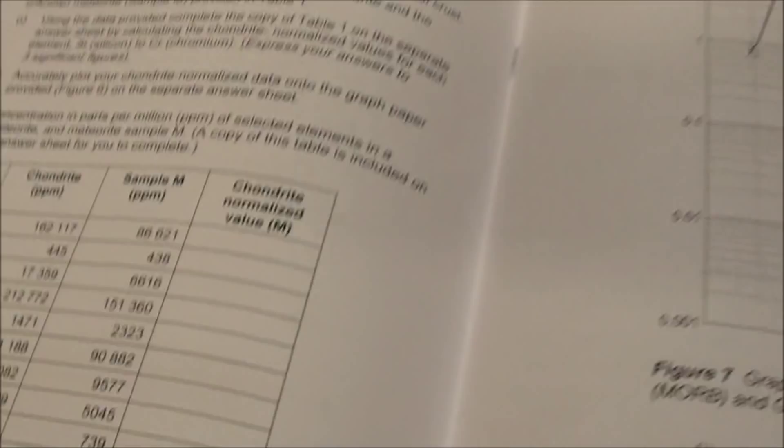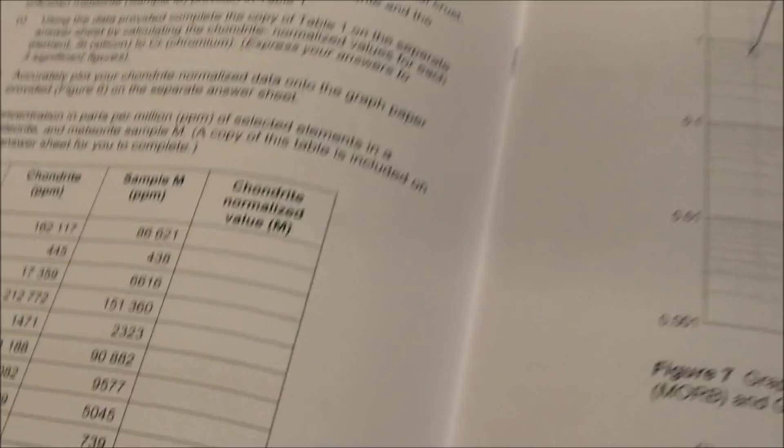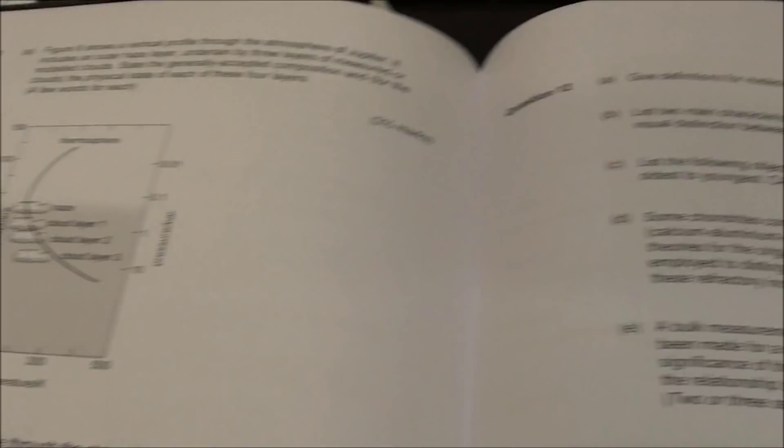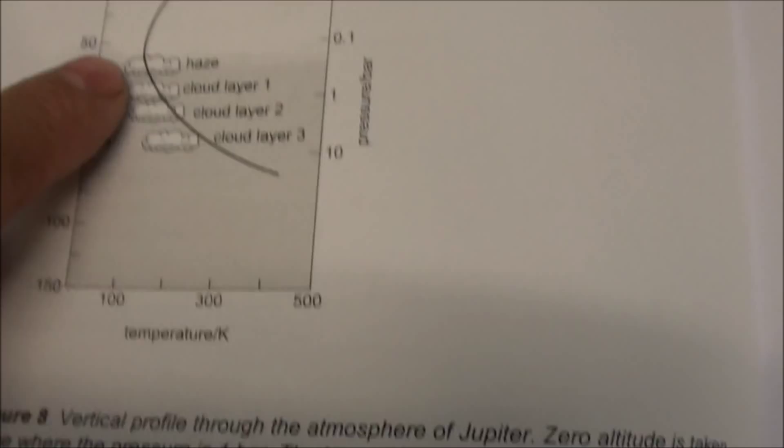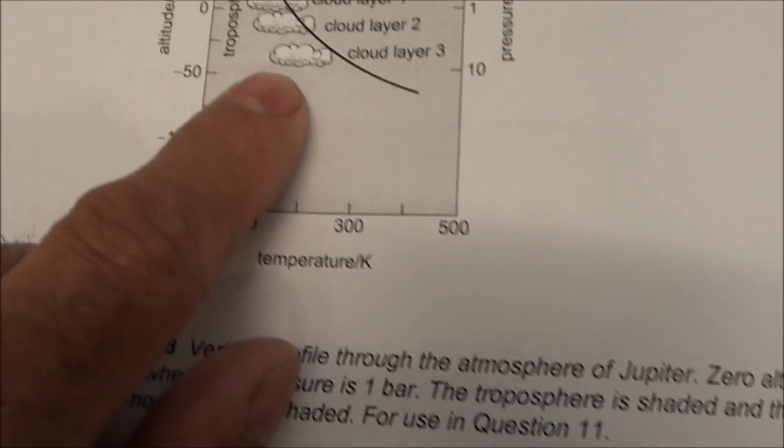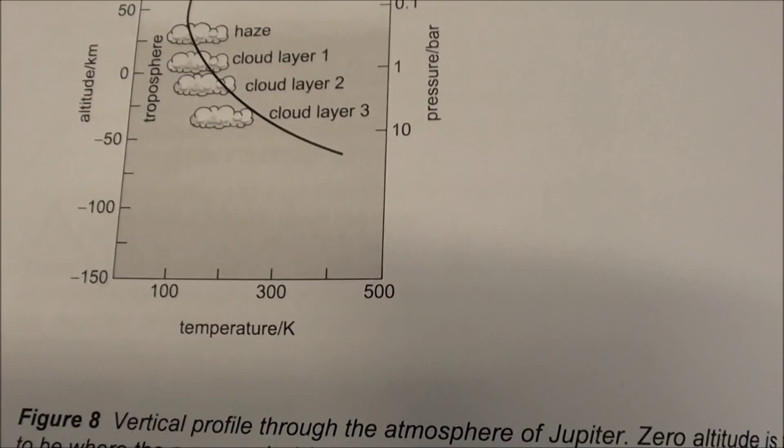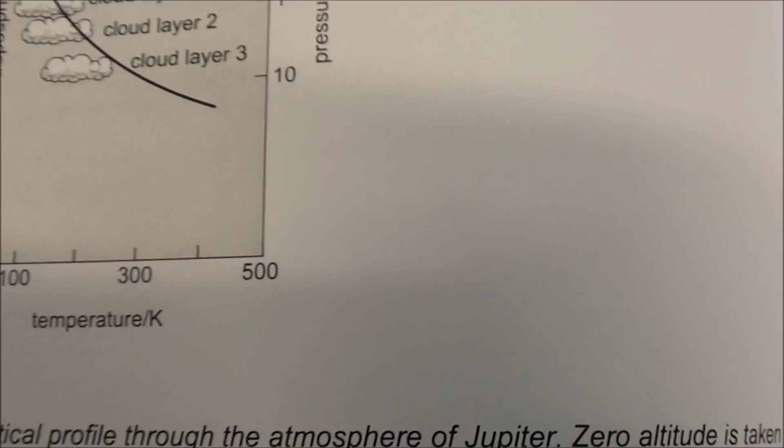OK, there's always a graph to plot. Use some data to normalise and plot a graph. People can score very highly on that question. Here's a diagram we asked you to recognise. It's saying it's a profile through the atmosphere of Jupiter. So what are these cloud layers made of? Well, this is a figure from the book. You should recognise it. And if you realise that Jupiter's outermost clouds are ammonia, and then there's ammonium hydrogen sulphide, and water lower down, supposedly, you will have got the compositions of these layers.